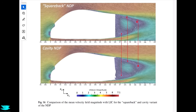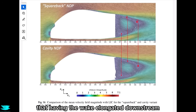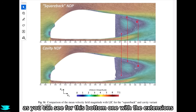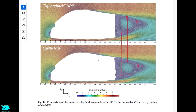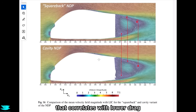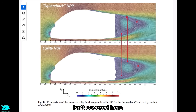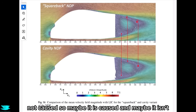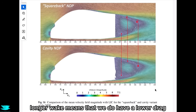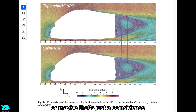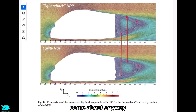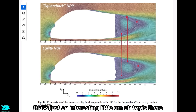One interesting point: one study actually suggests that having the wake elongated downstream — as seen for the car with extensions — correlates with lower drag. However, it's correlated, not necessarily caused. Maybe this longer wake does mean lower drag, or maybe that's just a coincidence. More research may be needed to understand why that correlation exists.